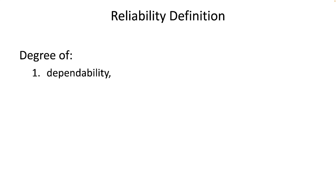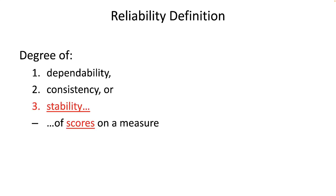Reliability is the degree of dependability, consistency, or stability of scores on a measure — either predictors, criterion, or other variables — used in selection research. It is important to emphasize that it is the score on an instrument that is reliable, not the instrument itself. We can never say that a test is reliable.